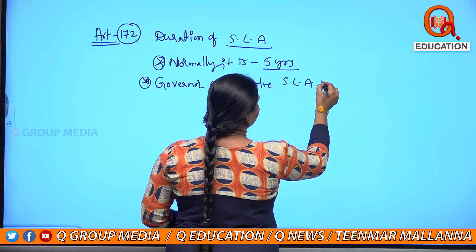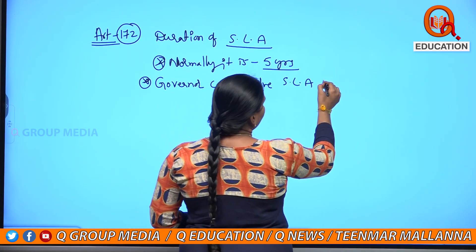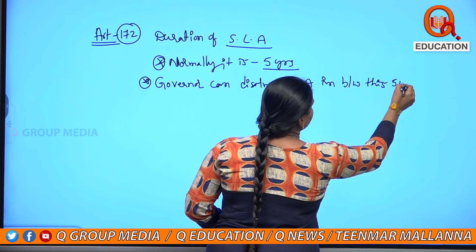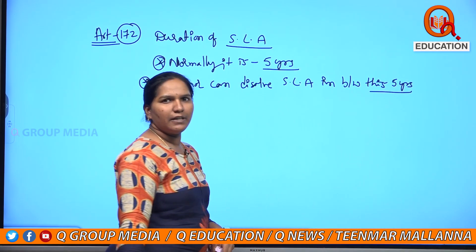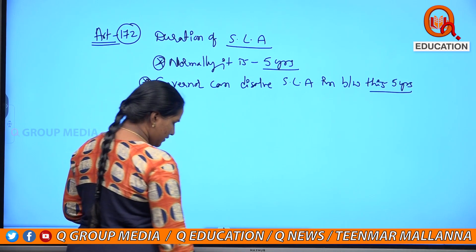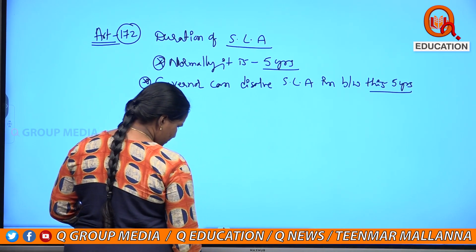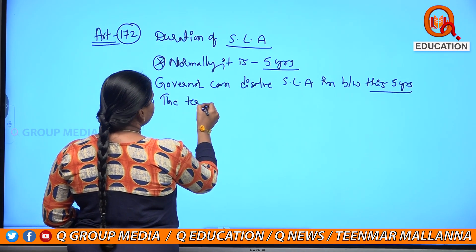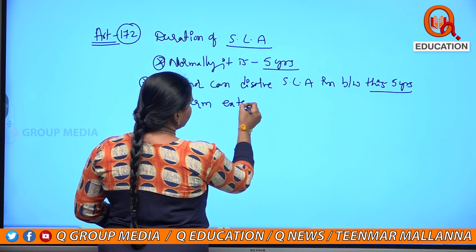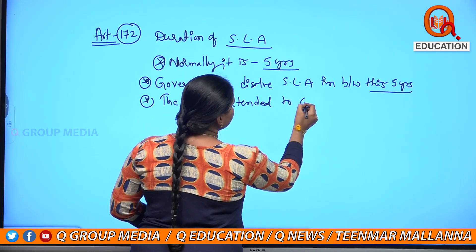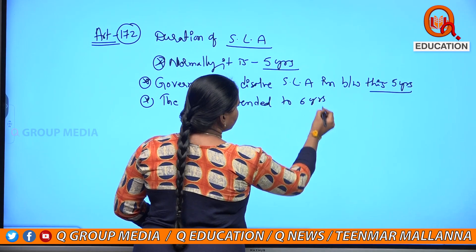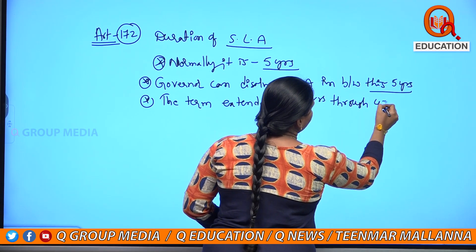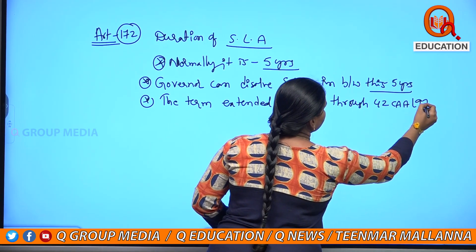The state legislative assembly can be dissolved in between this 5 years. The term was extended to 6 years through the 42nd Constitutional Amendment Act in 1976.